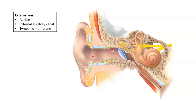The external auditory canal is a curved tube about two and a half centimetres long that lies within the temporal bone and leads to our tympanic membrane. It contains a few hair cells, as well as specialised sweat glands which secrete earwax. The combination of the hair and the earwax helps prevent dust and foreign objects from entering our ear.